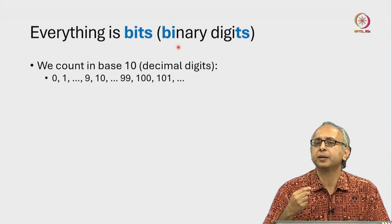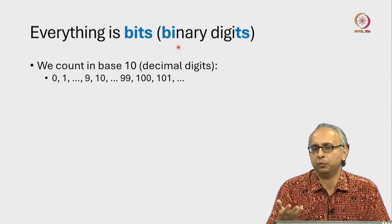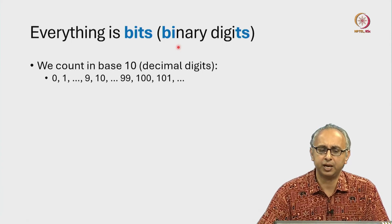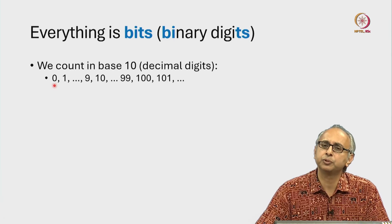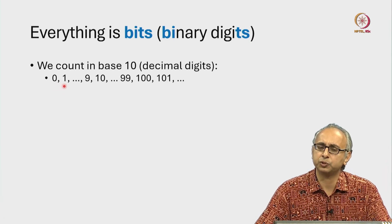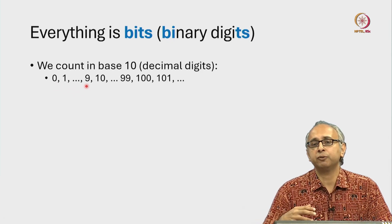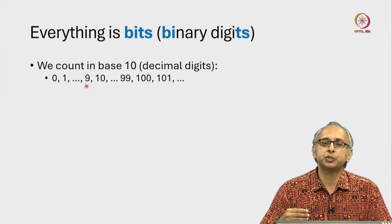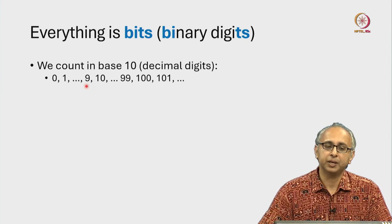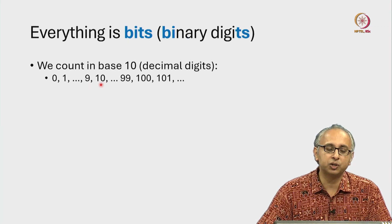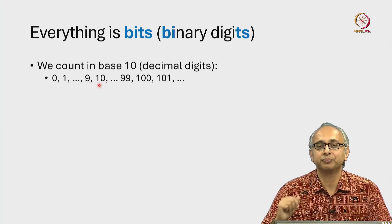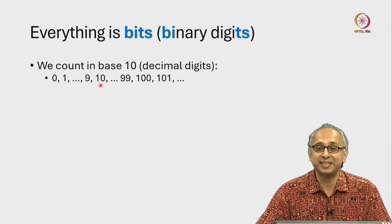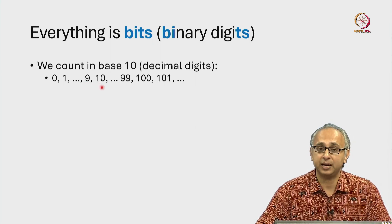To understand this, think about how we count. We count with the 10 decimal digits 0 to 9. So if we are counting from 0 — 0, 1, 2 and so on — finally when we hit 9, we have run out of decimal digits. So the next highest number we have to create using a combination of the previous digits. We write 1, 0 and of course we read that as 10, which is the one that comes after 9.